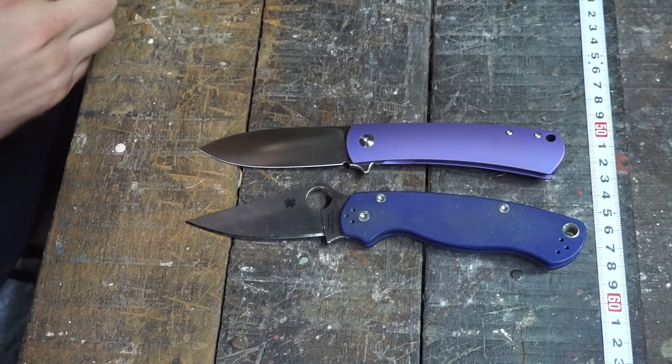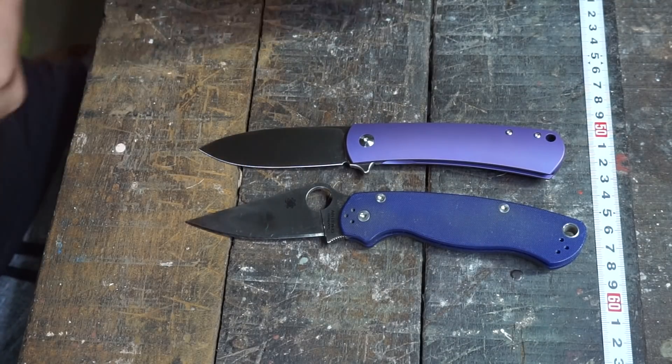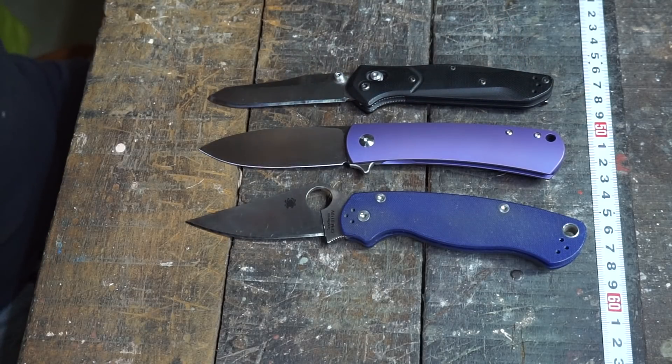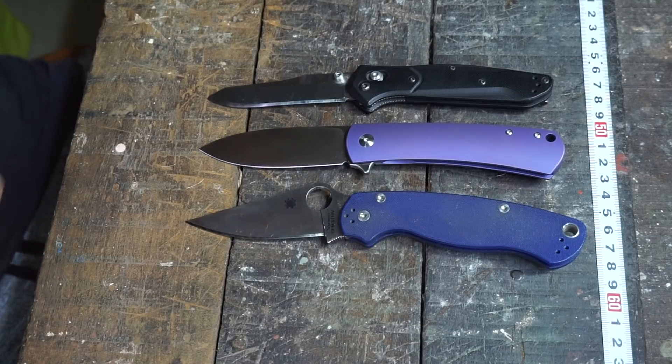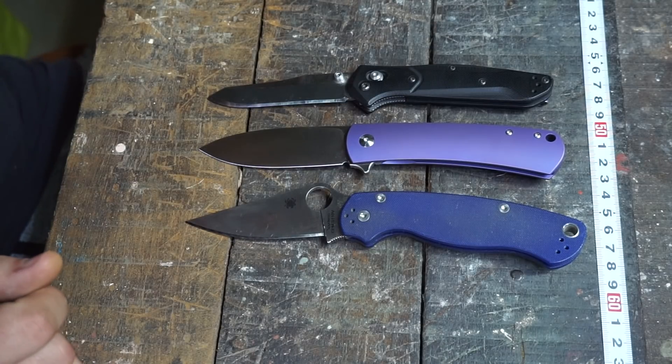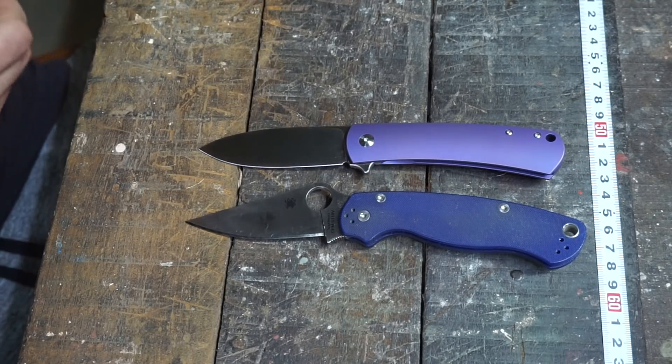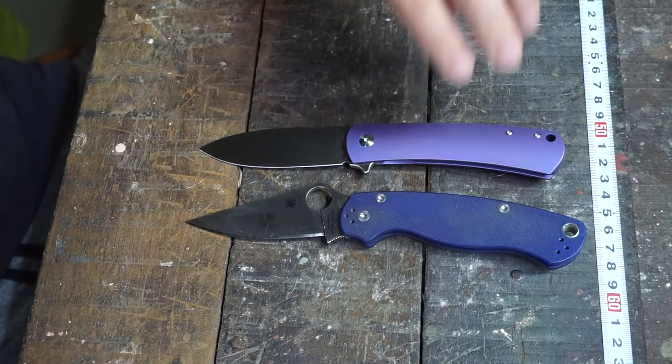And then putting above it, the Benchmade 940. Just put it tip to tip there. A bit more of a sleek knife there, the 940. But this is the category we're looking at. Not a Kizer Gemini sized Laconico knife, just a little bit bigger. So that's the rough size.